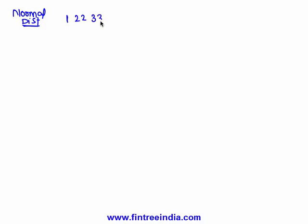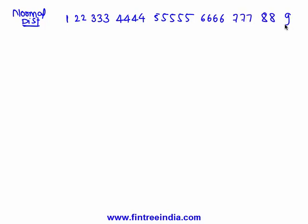To build a better intuition, consider a hypothetical dataset like: 1, 2, 2, 3, 3, 3, 4, 4, 4, 4, 5, 5, 5, 5, 5, 6, 6, 6, 6, 7, 7, 7, 8, 8, 9. With thousands of such variables, the mean, median, and mode would all be 5. Half the variables are on the left and half on the right, exhibiting perfect symmetry. Therefore, the skewness of this dataset is 0.